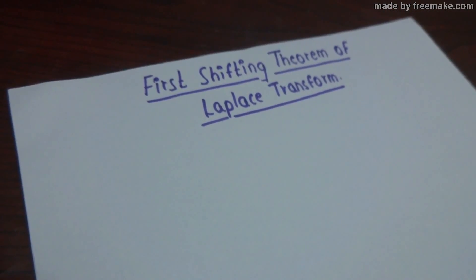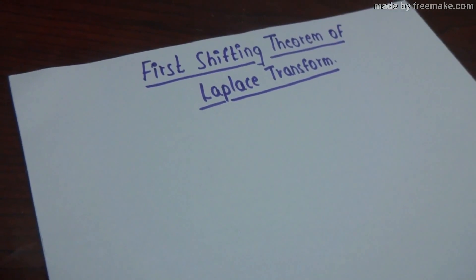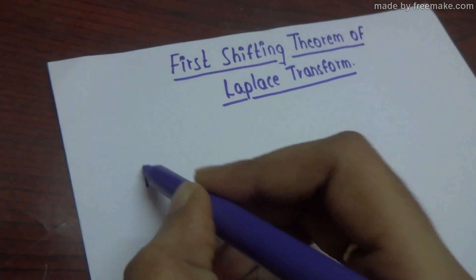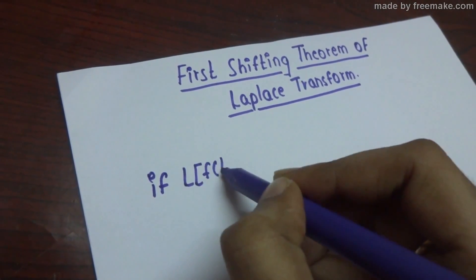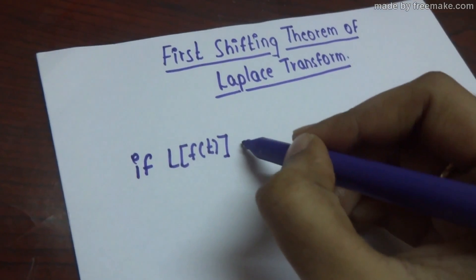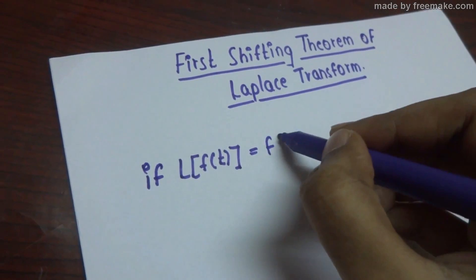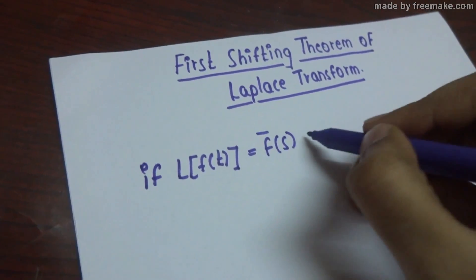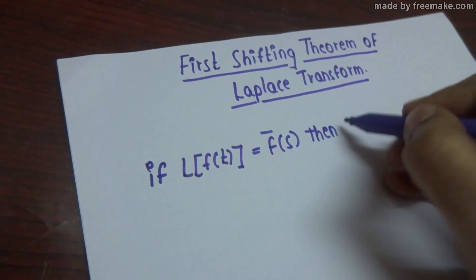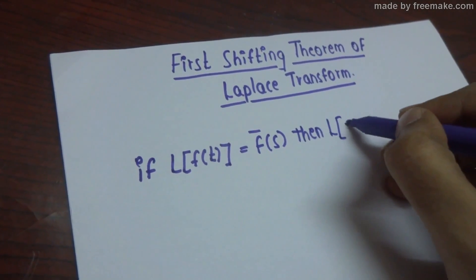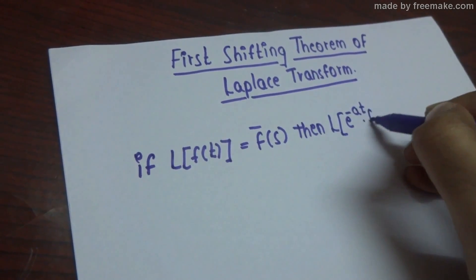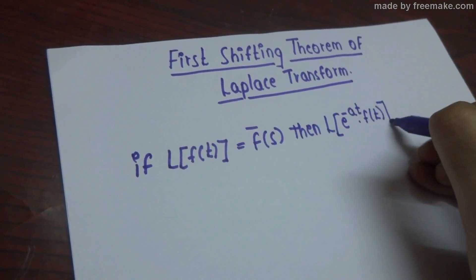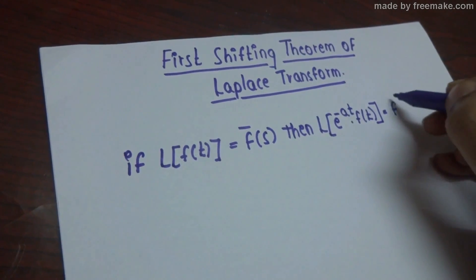The condition for first shifting theorem of Laplace transform is: if Laplace of f(t) is equal to function of s, then Laplace of e^(-at) into f(t) is equal to function of s plus a.